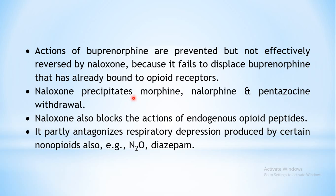When naloxone is injected in individuals taking morphine, nalorphine, or pentazocine, it will start precipitating withdrawal symptoms. Not only that, naloxone can also block the actions of endogenous opioid peptides - certain peptides found in the body endogenously that interact with opioid receptors and produce similar actions. Those actions produced by endogenous opioid peptides can also be blocked by naloxone very effectively.